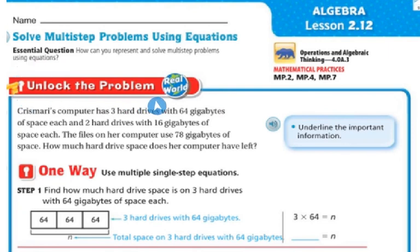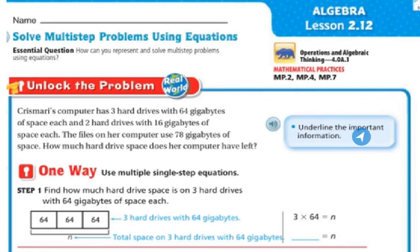Let's unlock the problem. Krismari's computer has three hard drives with 64 gigabytes of space each and two hard drives with 16 gigabytes of space each. The files on her computer use 78 gigabytes of space. How much hard drive space does her computer have left?